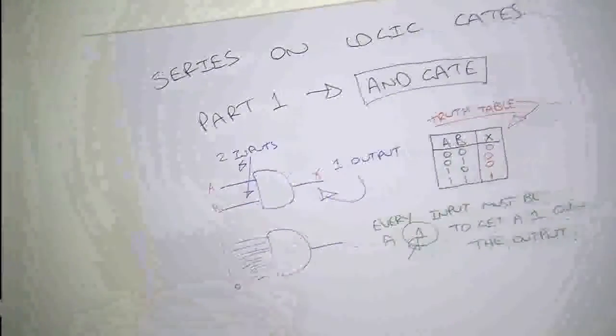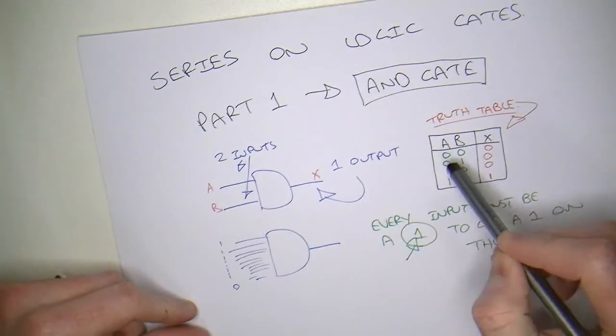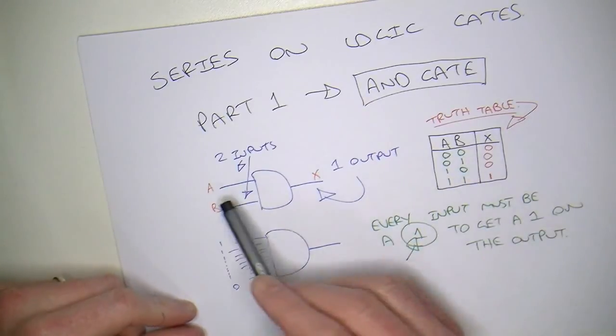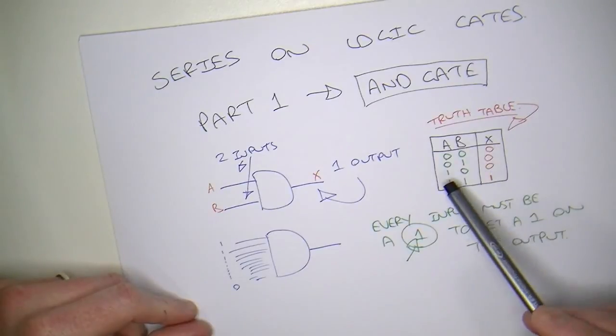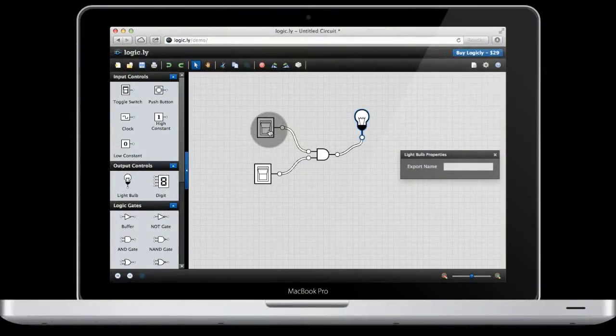So, if we have a look again at this truth table, there's four combinations of zeros and ones that we can have on two inputs. I said the only time we'll get a one on the output is when both inputs are a one. So, let's try that out. Zero, zero. So, both switches are off and the light bulb is off. If I go zero, one, you can see this one has a logic one on it, but still the output is a zero. One, zero. The output is still a zero. The only time I should ever get a one on the output is when both inputs are a one. And now I get a one on the output.